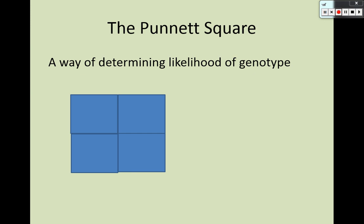We're going to draw a 2x2 square and put the mother's, or egg genes, on the top, and the father's, or sperm genes, on the side. It doesn't matter — you can swap those — because the zygote, the cell that is the combination of sperm and egg, doesn't actually know which genes came through the egg and which came through the sperm. In this case, the biological mother is homozygous dominant, meaning all eggs carry the capital F dominant allele. The father was heterozygous, meaning half of his sperm carry the dominant allele and half carry the recessive allele.